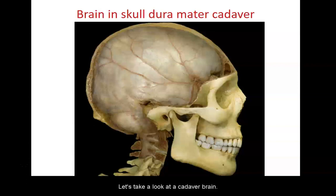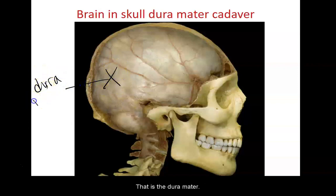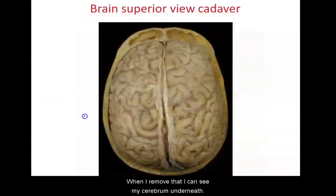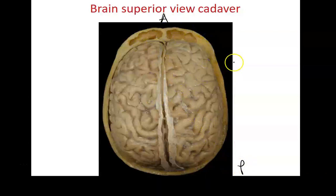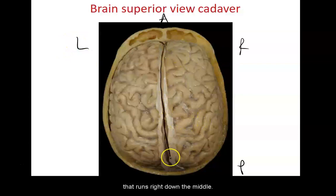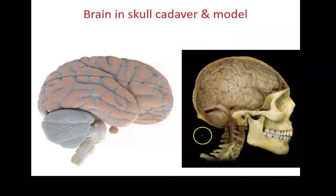Now let's look at a cadaver brain. When we look at it within the skull, it doesn't really look like a brain because of the tough connective tissue covering it — that is the dura mater, the tough mother protecting the brain. When I remove that, I can see the cerebrum underneath. There's a groove called the longitudinal fissure running right down the middle, separating the right and left hemispheres. You can see all the gyri and the sulci.